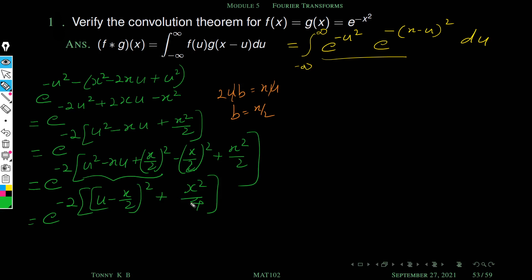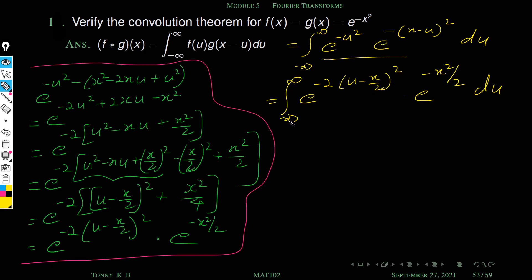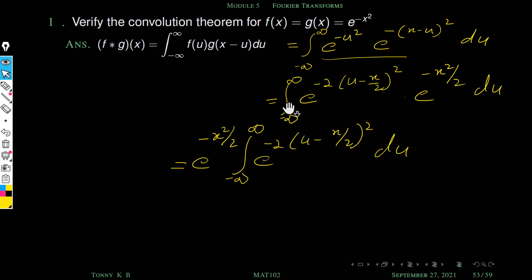Using e^(a+b) = e^a · e^b, the integrand becomes e^(−2(u − x/2)²) times e^(−x²/2). Since e^(−x²/2) does not depend on u, we take it outside the integral: e^(−x²/2) times integral from minus infinity to plus infinity of e^(−2(u − x/2)²) du.